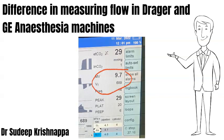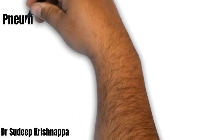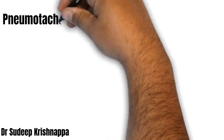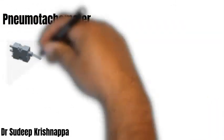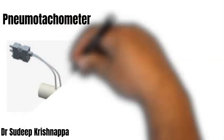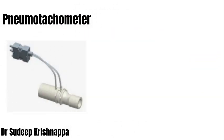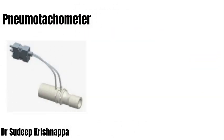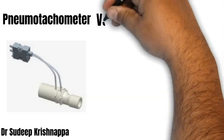GE and Drager machines are among the most commonly used anesthesia workstations. While the GE machines use a device called a pneumotachometer, Drager machines use another measuring mechanism called a hot wire anemometer.